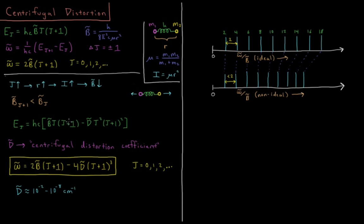What we get is that E sub J with this energy-dependent rotational constant equals hc times the quantity B bar J times J plus 1, just as it was to begin with. Now we have a new term, minus D bar J squared times J plus 1 squared. D bar is called the centrifugal distortion coefficient, and that's a measure of the effect of how much longer the bond length gets as our rotational quantum number goes up.